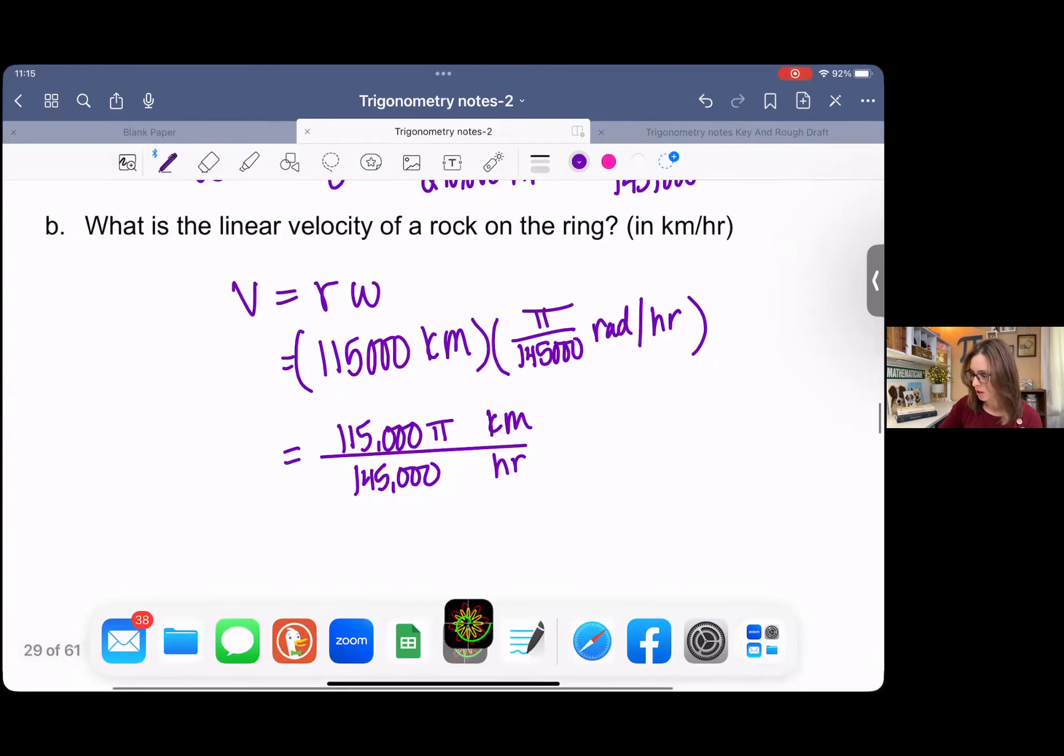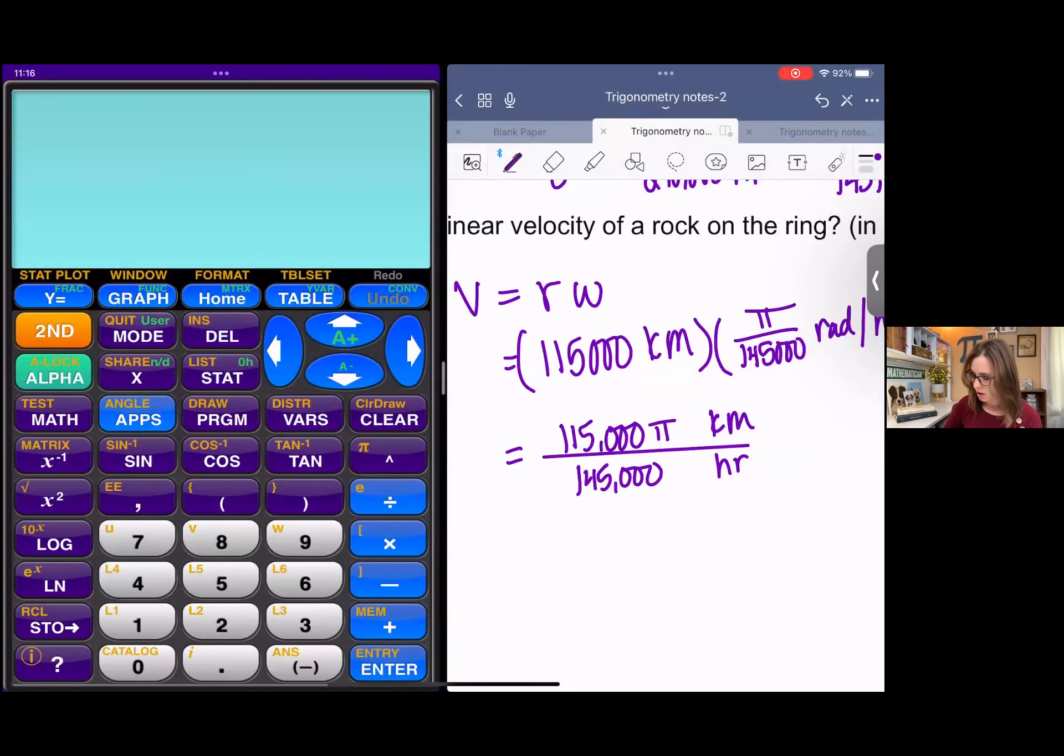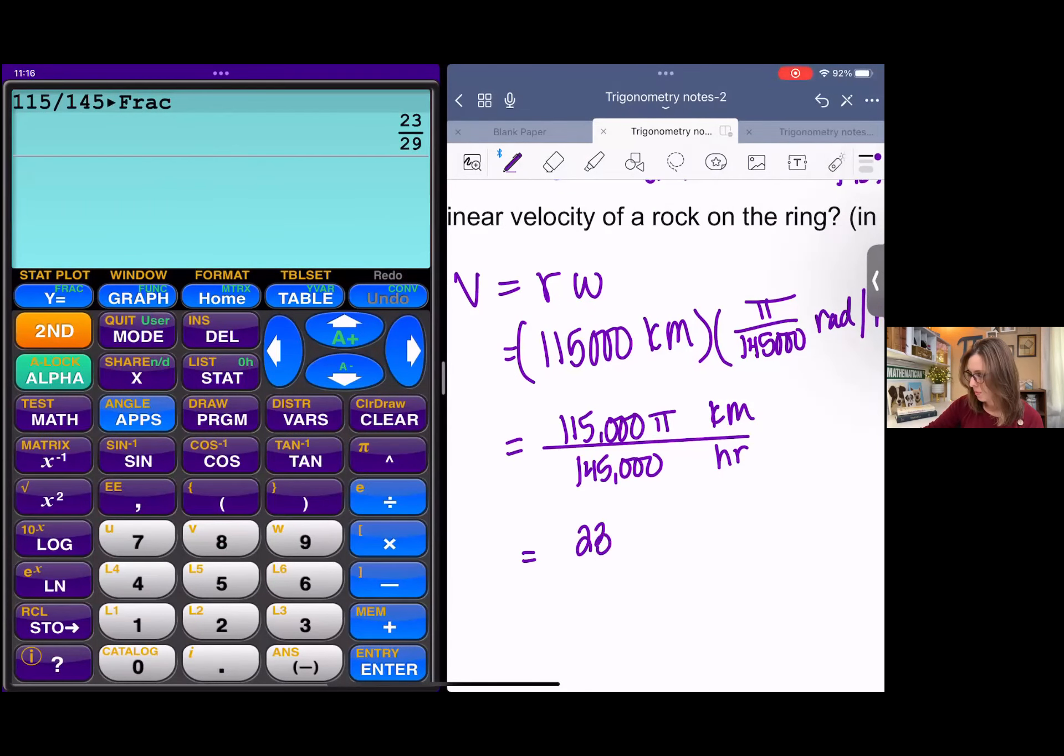If we want to reduce this, we can just type in 115 over 145, because the zeros divide. We get 23 pi over 29 kilometers per hour. And that's it. That's all you have to do. So that's all I have for this lesson.